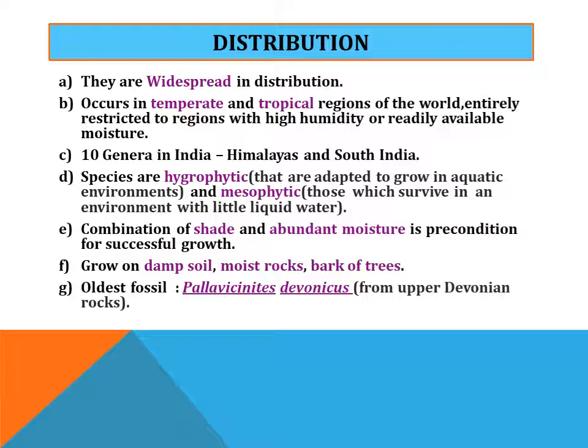There are about 10 genera in India, found in the Himalayas and South Indian regions. These species are hygrophytic, meaning they are adapted to grow in aquatic environments, and mesophytic, meaning they survive in environments with little liquid water. A combination of shade and abundant moisture is a precondition for successful growth. They grow on damp soil, moist rocks, and bark of trees. The oldest fossil is Pallavicinia devonica from upper Devonian rocks.